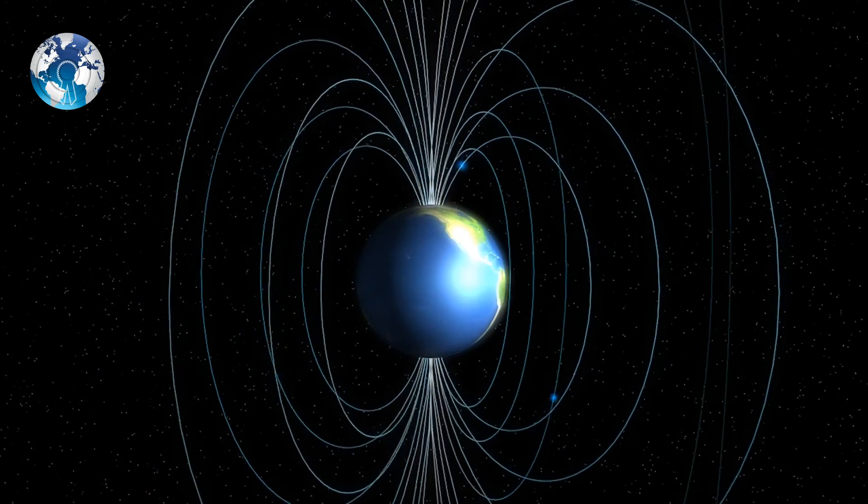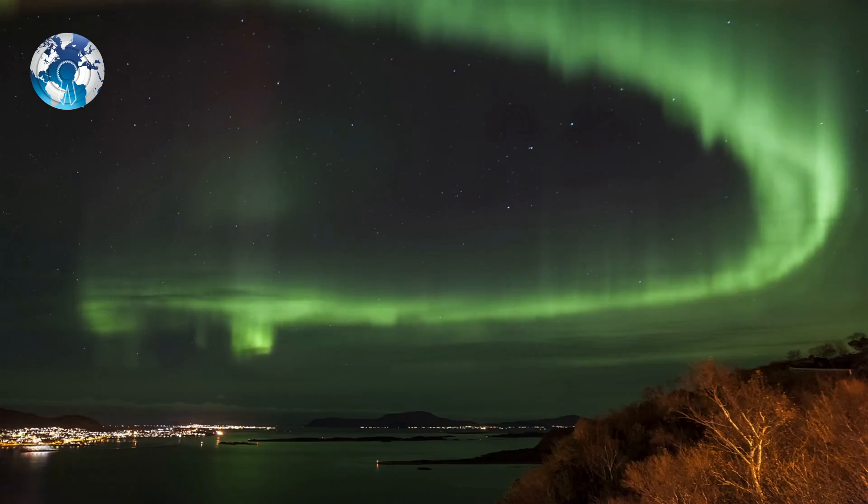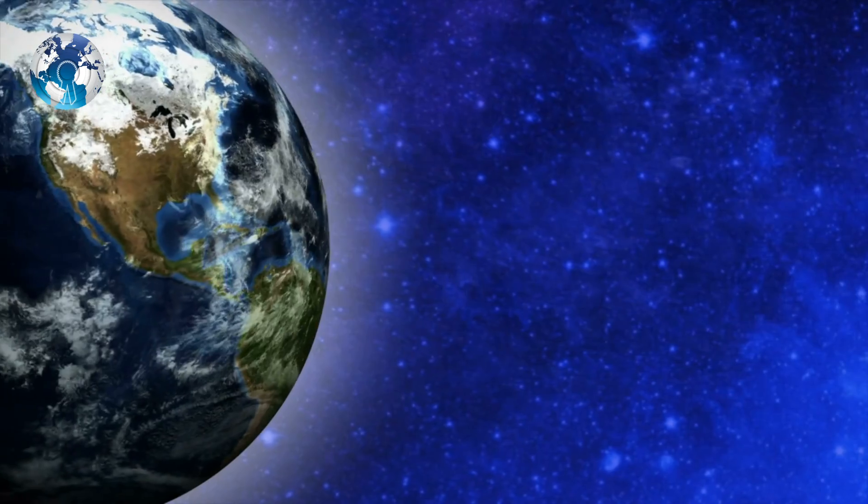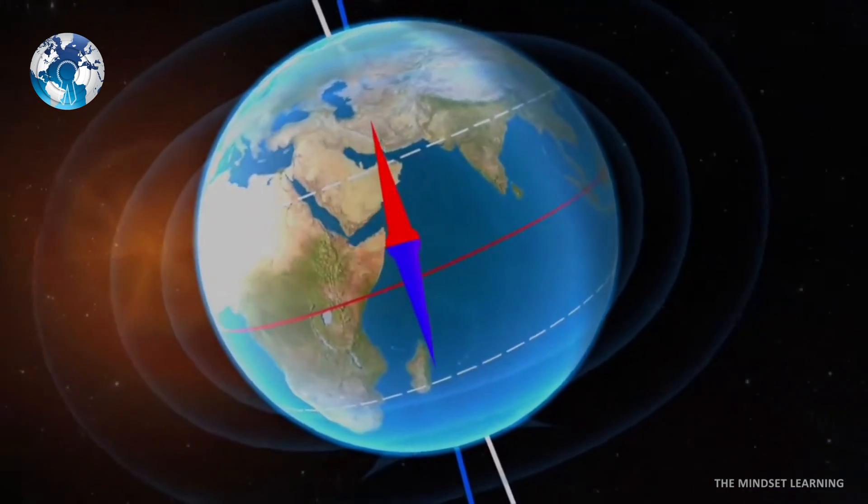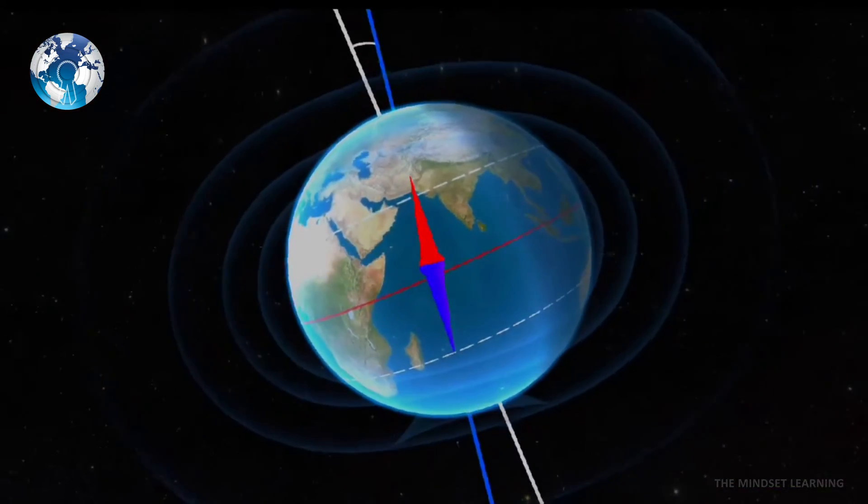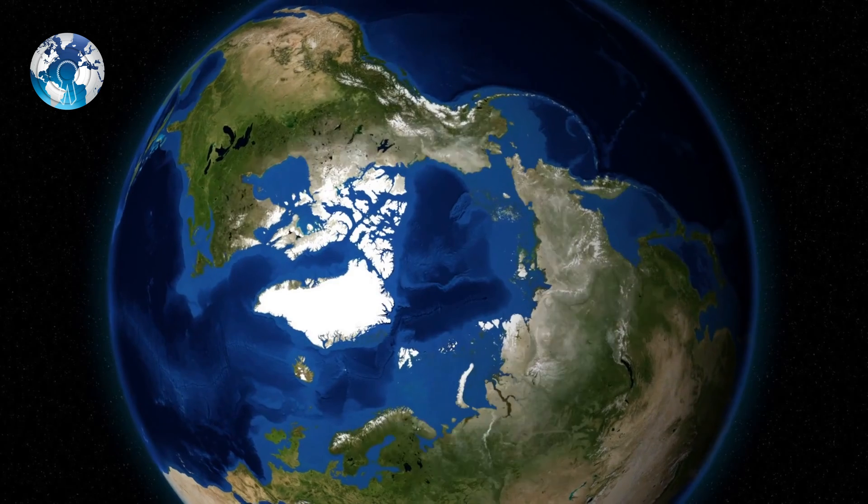Liverpool paleomagnetic researcher and lead author of the paper, Dr. Lewis Hawkins, said when considered alongside the existing datasets, this supports the existence of an approximately 200 million year cycle in the strength of Earth's magnetic field related to deep-Earth processes.